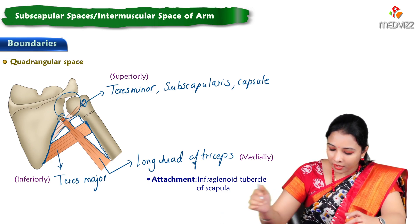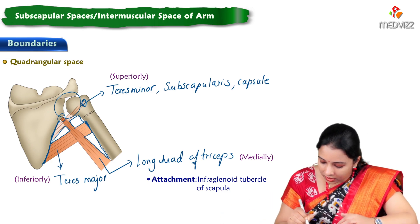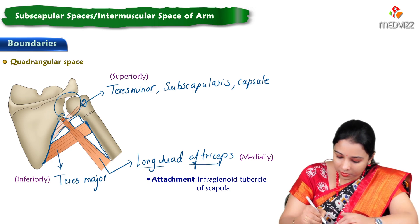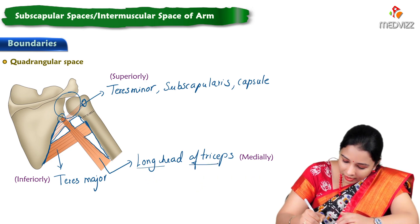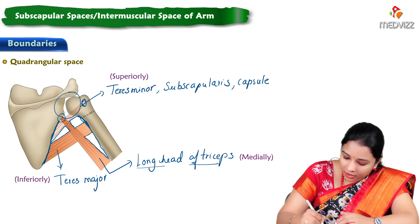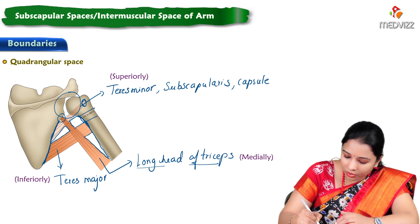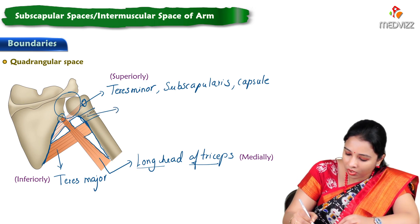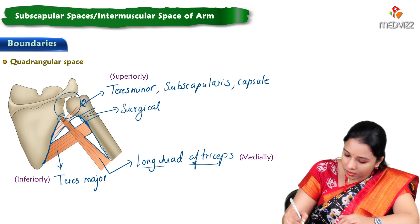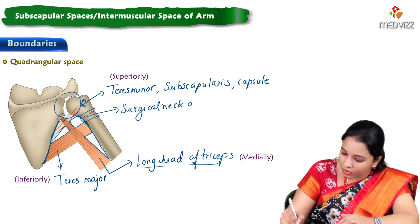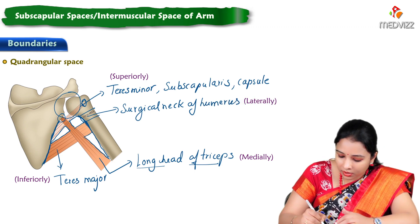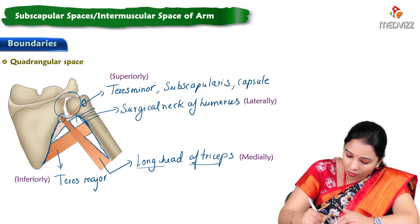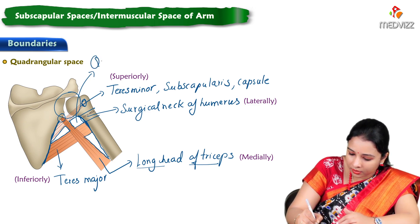So medially it is the long head of triceps, and laterally what you are seeing is the neck of the humerus — specifically this part is called the surgical neck of the humerus. These are the boundaries of the quadrangular space.